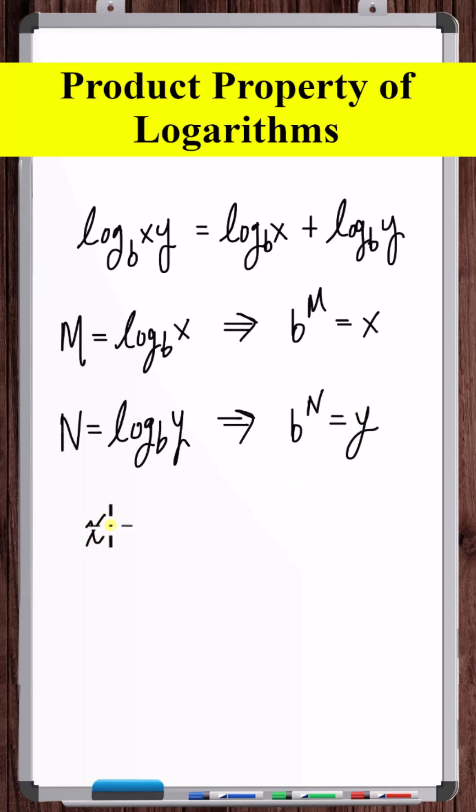So now if we take x times y, that's equal to b to the m times b to the n, which is equal to b to the m plus n.